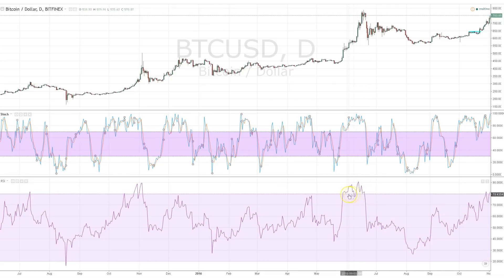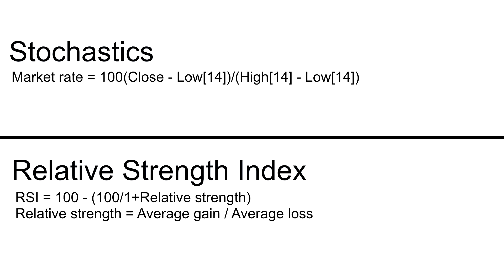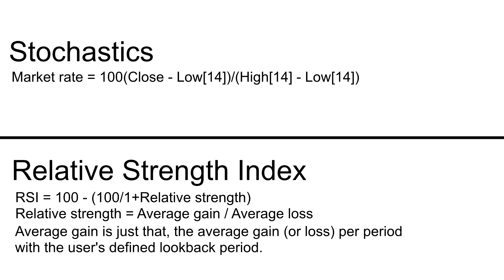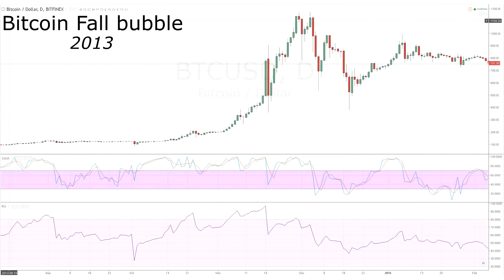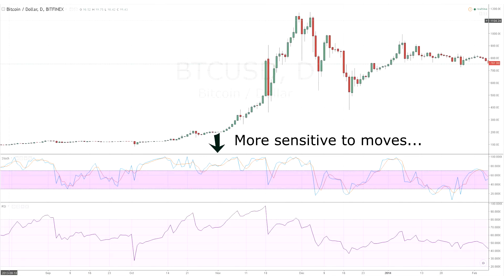The formula is: RSI equals 100 minus 100 over 1 plus relative strength, where relative strength is the average gain over average loss. Average gain is just that — the average gain or loss per period, with the user's defined lookback period. The traditional setting is 14. Interpretation is also similar to the stochastic oscillator, with two levels dictating what is traditionally overbought or oversold. Much like the stochastic oscillator, RSI will remain deep into the extremes during an extended rally.